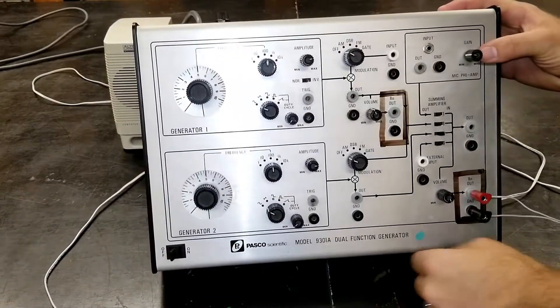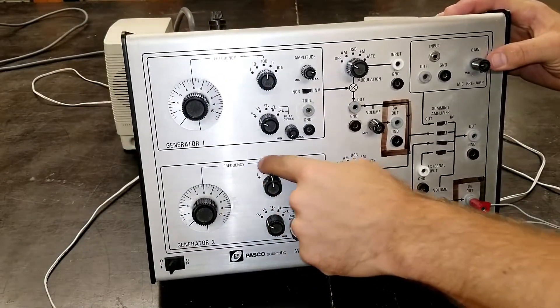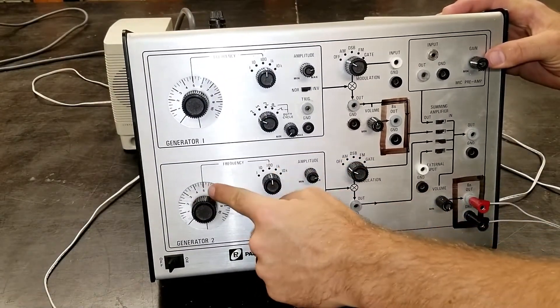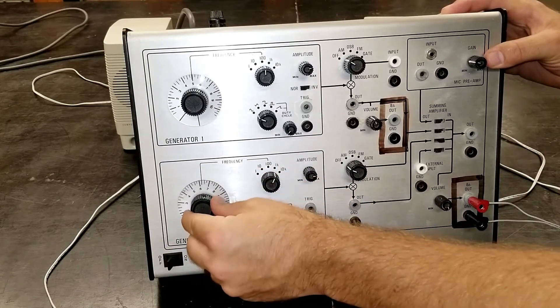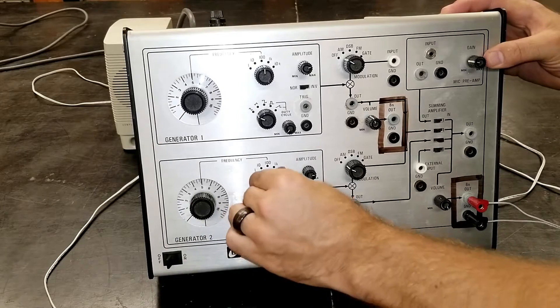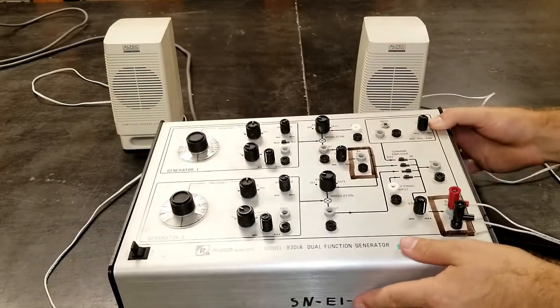You also need to pay attention to the scale you're using. Right here can determine the step size. Right now we're at 100, so that's 600, 700. If I switch over to the thousands, I'm now at 7000, 6000, then 5000. So be aware of how you're changing your frequency.